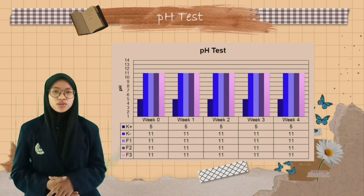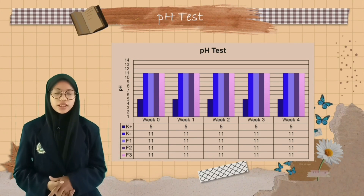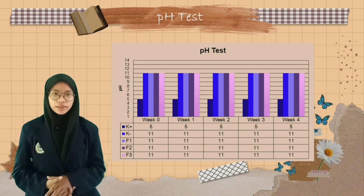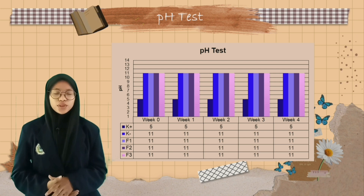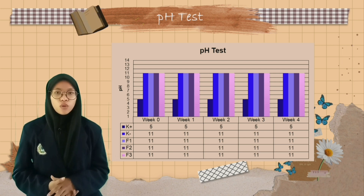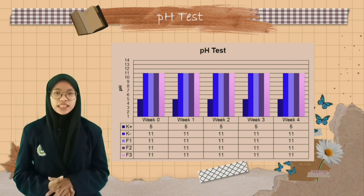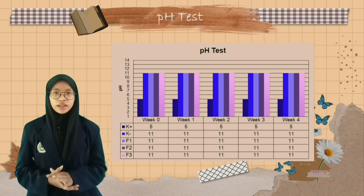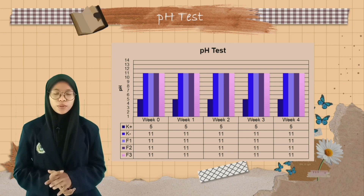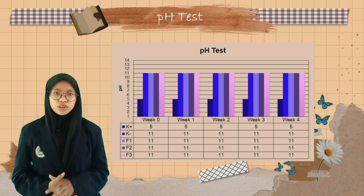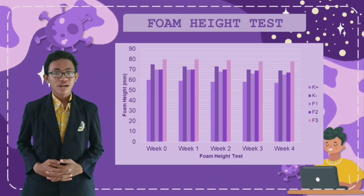The pH test was conducted to determine the degree of acidity of the soap, because if it is not in accordance with skin pH according to Indonesian National Standard, it can cause irritation. The test results showed that the positive control has a pH of 5, while the negative control, Formulation 1, Formulation 2, and Formulation 3 all have the same pH of 11. After 4 weeks of storage, it can be concluded that negative control, Formulation 1, Formulation 2, and Formulation 3 meet the Indonesian National Standard pH range of 8 to 11.